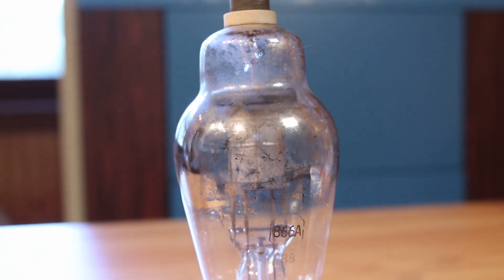This one is a 3B25 and it's filled with xenon gas. And this is an 866A and it's filled with mercury vapor. As a matter of fact, I can actually see the little droplets of mercury stuck to the side of the glass. It's really cool looking.